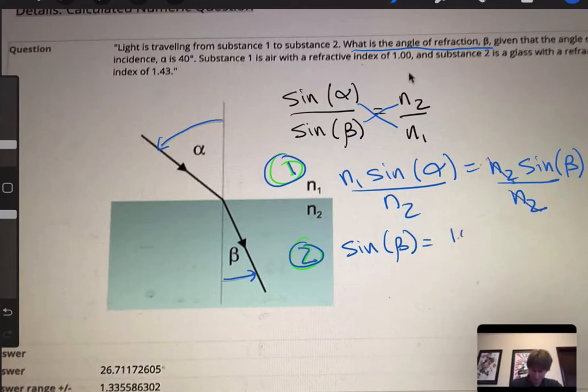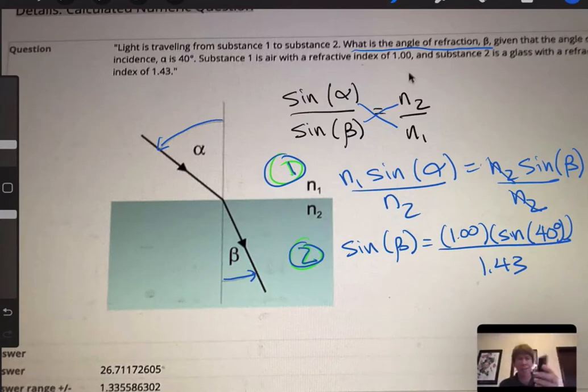I'll just go ahead and plug the numbers in. It's going to be n1, which is 1.00, times sine of 40 degrees divided by n2, which is given as 1.43. Now I've got my calculator here.